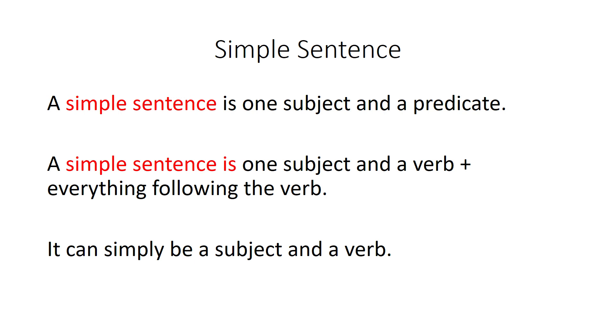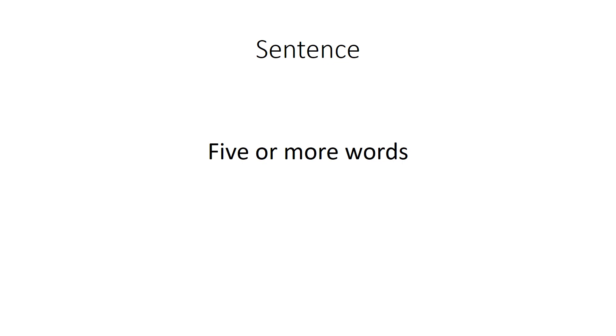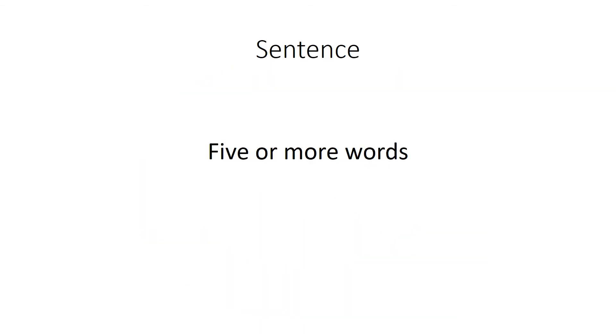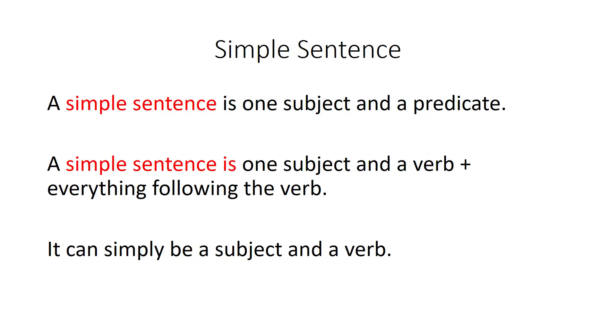So now let's go to simple sentences. What's the definition of a simple sentence? A simple sentence is one subject and a predicate. Or you can think of it this way: a simple sentence is one subject and a verb plus everything following the verb. If you learned the definition of sentences as 'five or more words,' that's wrong. Take a look at these five words: up, right, phone, next, green — that's not a sentence. A simple sentence is one subject and a predicate.